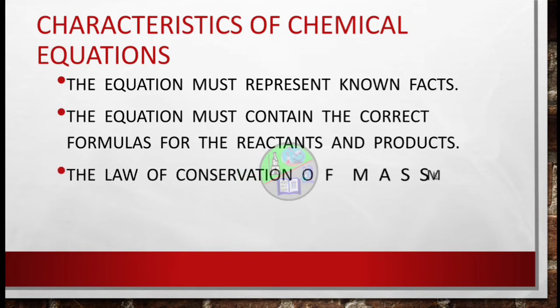The third is the law of conservation of mass must be satisfied, and the law states that atoms can neither be created nor be destroyed in an ordinary chemical reaction. Only the thing that happens is rearrangement of the atoms. So there must be same number of atoms on both sides of the equation.